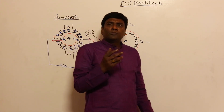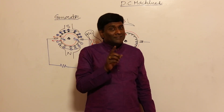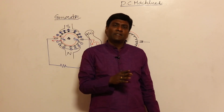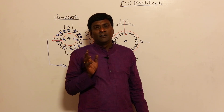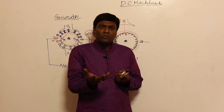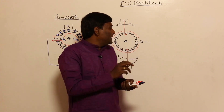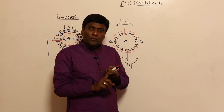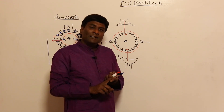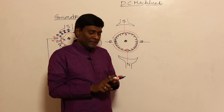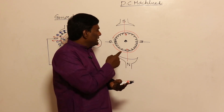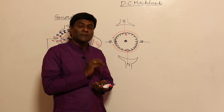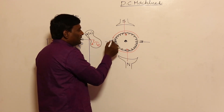An important interview question: in a DC machine, before the commutator, currents are AC. That AC is converted to DC by the commutator. So inside the armature, currents are AC. The number of turns is very high, the rotor is made of iron with high relative permeability, and inductance is directly proportional to number of turns and relative permeability — so inductance is very high. Then why is armature inductance not considered in a DC machine?